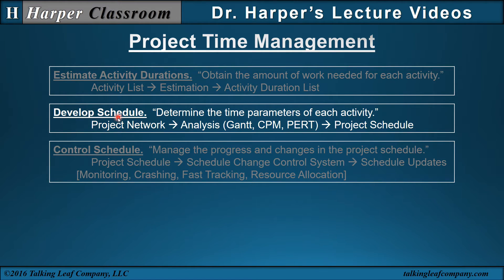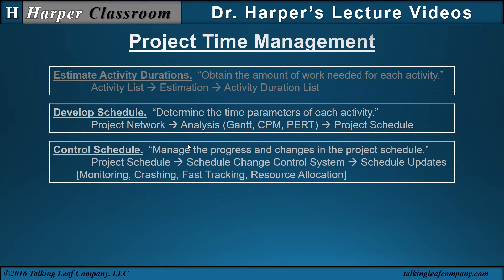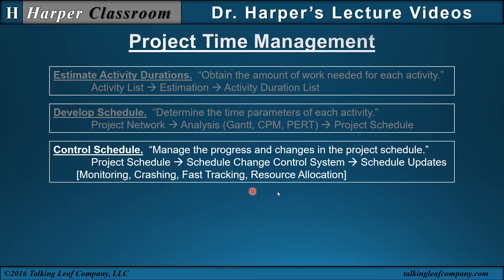The next major process is develop schedule — determine the time parameters of each activity. From the project network and the activity duration list, the analysis could include a Gantt chart, which represents the schedule in graphical form; the CPM critical path method, which represents the schedule and produces a critical path; and PERT, program evaluation and review technique, which represents the schedule, produces a critical path, and generates probabilities. All these result in a project schedule. The next process is control schedule — manage the progress and changes in the project schedule — using a change control system including monitoring, crashing (reducing time), fast tracking (modifying activities), and resource allocation.